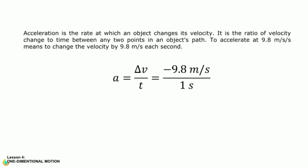Acceleration is the rate at which an object changes its velocity. It is the ratio of velocity change to time between any two points in an object's path. To accelerate at 9.8 meters per second per second means to change the velocity by 9.8 meters per second each second. Notice the acceleration: 9.8 meters per second has a negative sign, indicating that this acceleration is going downward.